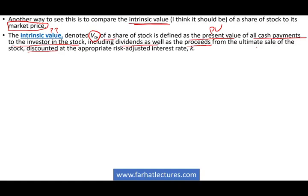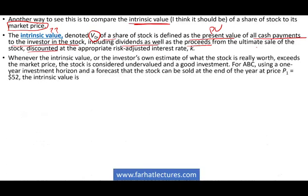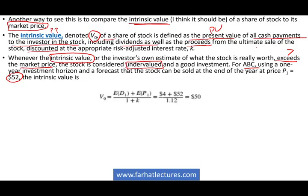You will discount the future dividend — the future payment — and you will discount the price of the stock to the present value. This will be the intrinsic value of the stock. We always know or can estimate the dividend, but the future price we can estimate too. Whenever the intrinsic value — what we think it's worth — is greater than the market price — what it is today — the stock is considered undervalued and a good investment. For ABC using a one-year investment horizon, forecasting the stock will be sold at $52, the intrinsic value is the present value of the dividend plus the present value of the stock: ($4 + $52) divided by 1.12, giving us V0 = $50.